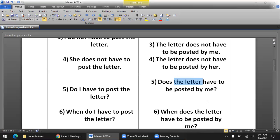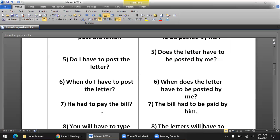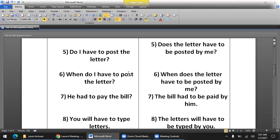Sixth sentence: 'When do I have to post the letter?' This is an information question, so we start the sentence with 'when.' Then we follow the question structure. Since it's a singular subject (the letter), we use does: 'When does the letter have to be posted by me?' End with a question mark.